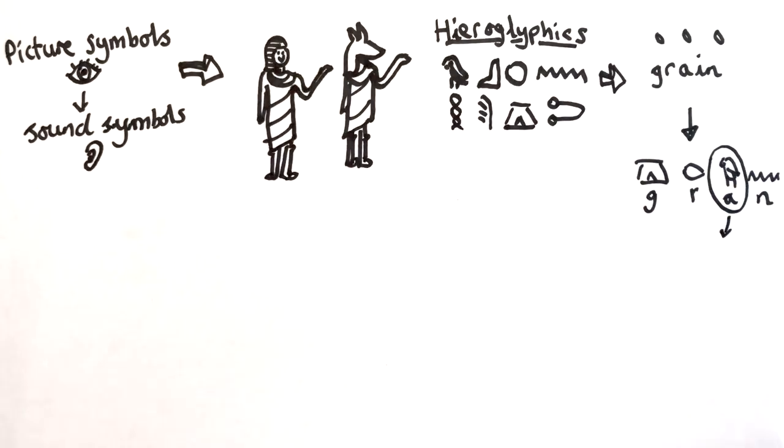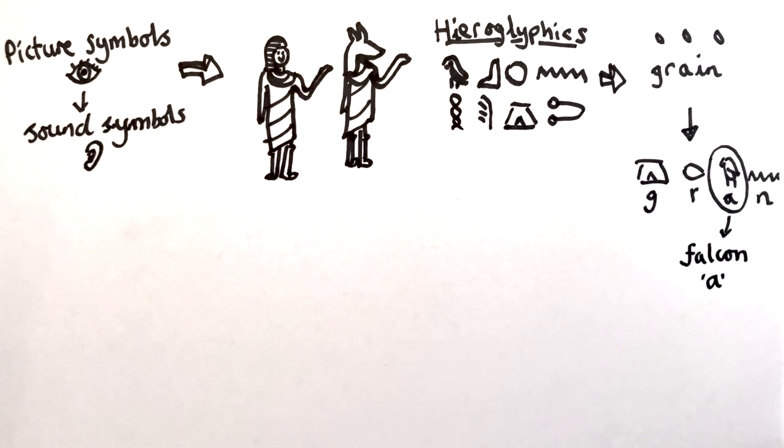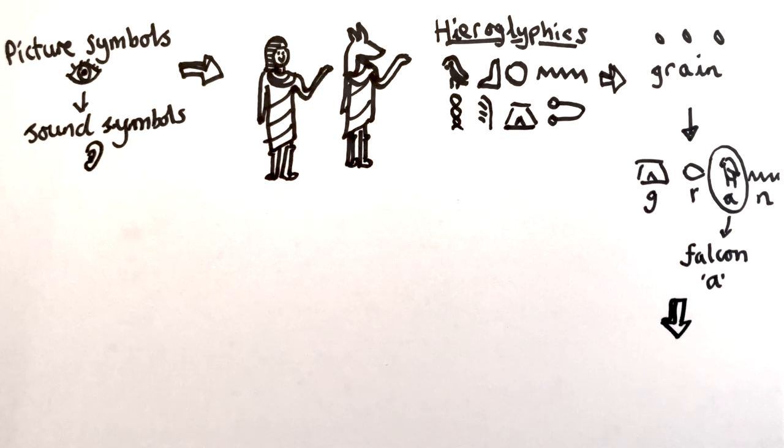And this symbol here means falcon, but it's also the symbol for a sound a bit like a. We're missing the eye too, but the Egyptians rarely actually wrote vowel sounds down. And of course they would have had a different word for grain, but you get my drift. Now writing grain with sound symbols may look more complicated here.